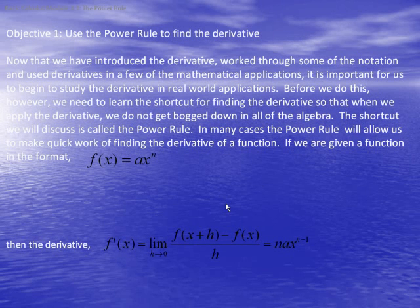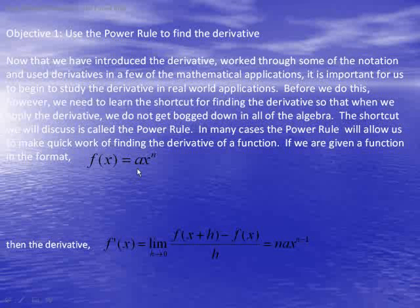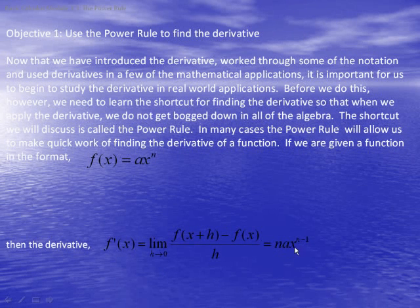In many cases the power rule will allow us to make quick work of finding the derivative of a function. If we are given a function in the format f(x) = ax^n, then the derivative f'(x) is equal to the limit as h approaches 0 of [f(x+h) - f(x)] / h, and that equals n·ax^(n-1). Notice that in our original function we had n, and this is one less. Whatever the exponent was of the original function is now multiplied times a, giving ax to one less than the original exponent.